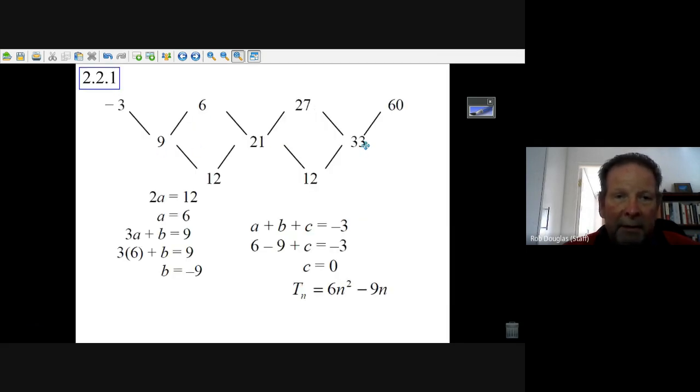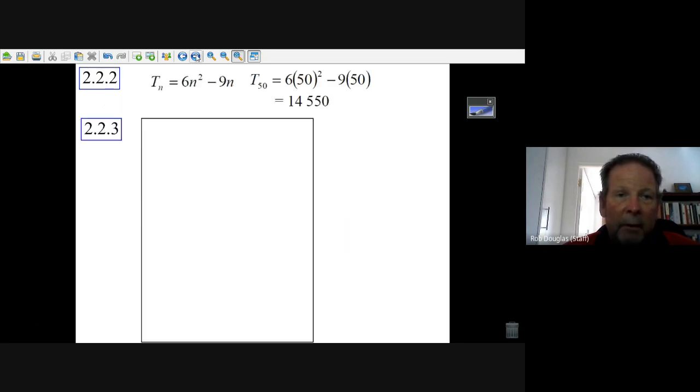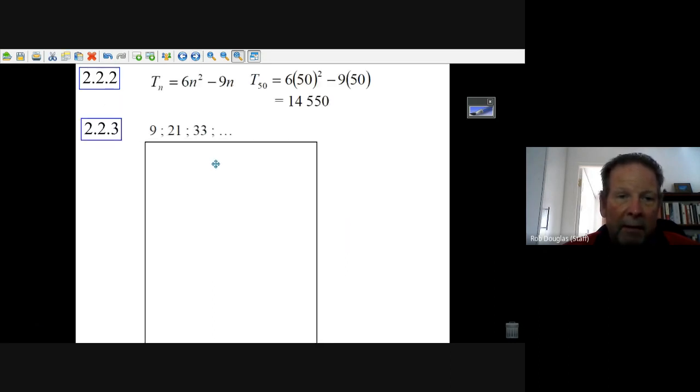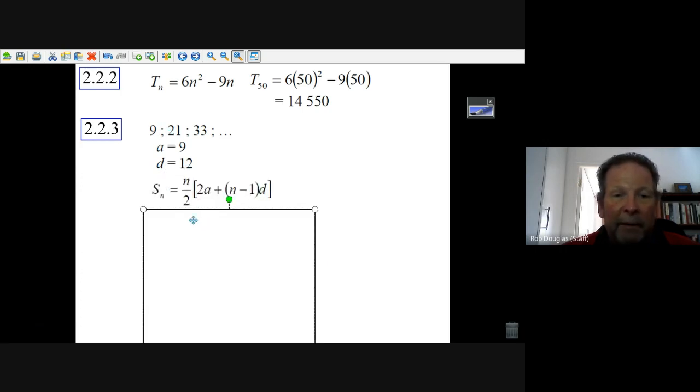So we take those first differences, all we need, there they are, 9, 21, 33, they just keep on going. There's a common difference between these things of 12 though, but the first term is 9. The common difference, 21 minus 9 is 12. And we've got a formula for the sum of this arithmetic series.